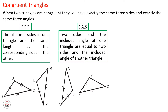So, side AC equal to side ZX and side CD equal to side ZY. The included angle between these two sides, C and Z, are also equal. If angle A equals angle Y, then these two triangles are not considered congruent triangles, because angle A and angle Y are not included angles between two equal sides.